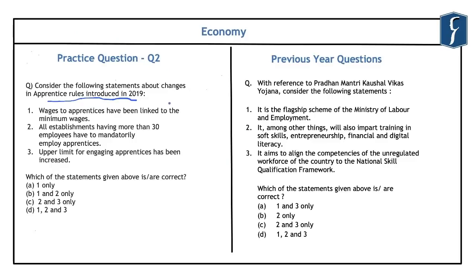The practice question on changes in apprentice rules 2019 states: first, wages to apprentices have been linked to minimum wages; second, all establishments with more than 30 employees must mandatorily employ apprentices; third, the upper limit for engaging apprentices has been increased. The key point is that wages have NOT been linked to minimum wages, making the first statement incorrect. By eliminating statement one, options A, B and D are ruled out. The correct answer is C, that is 2 and 3 only.